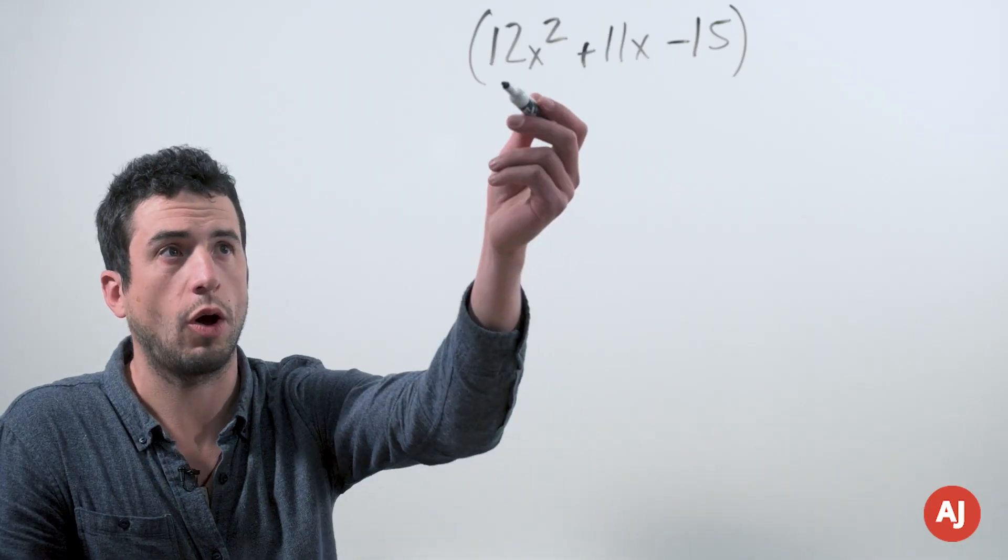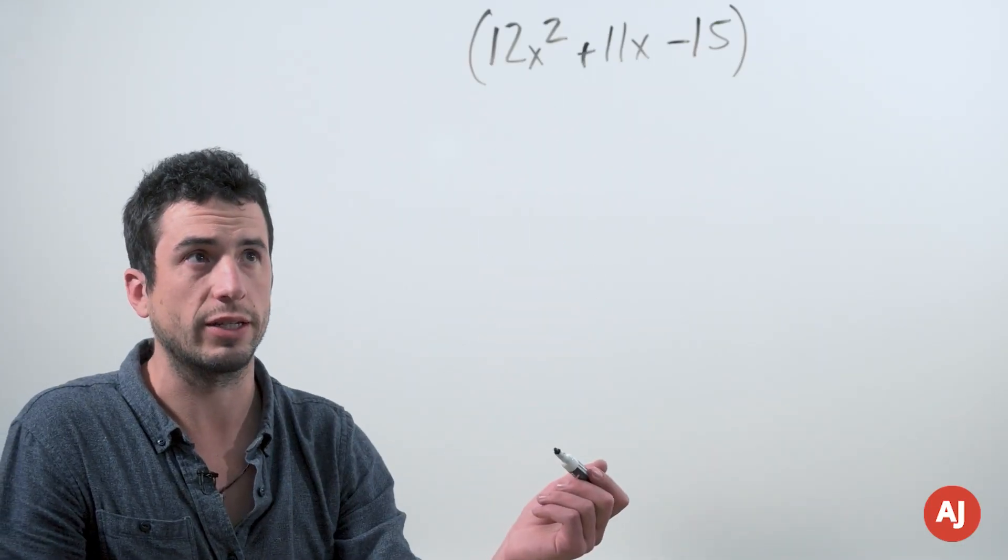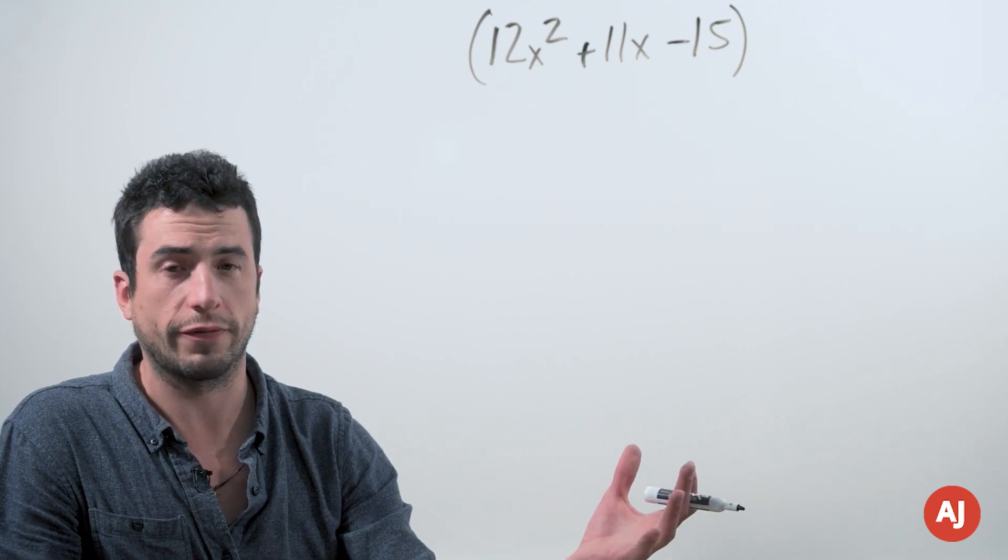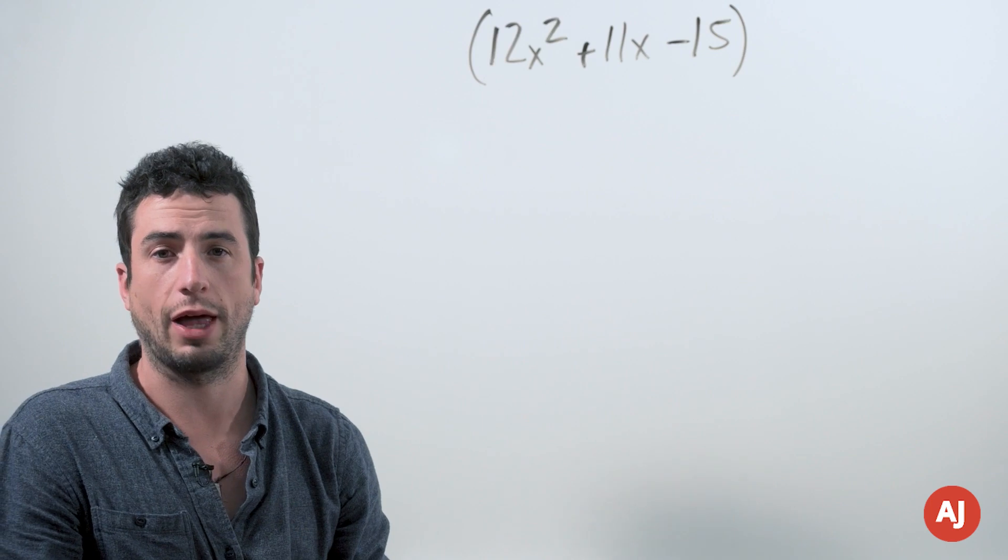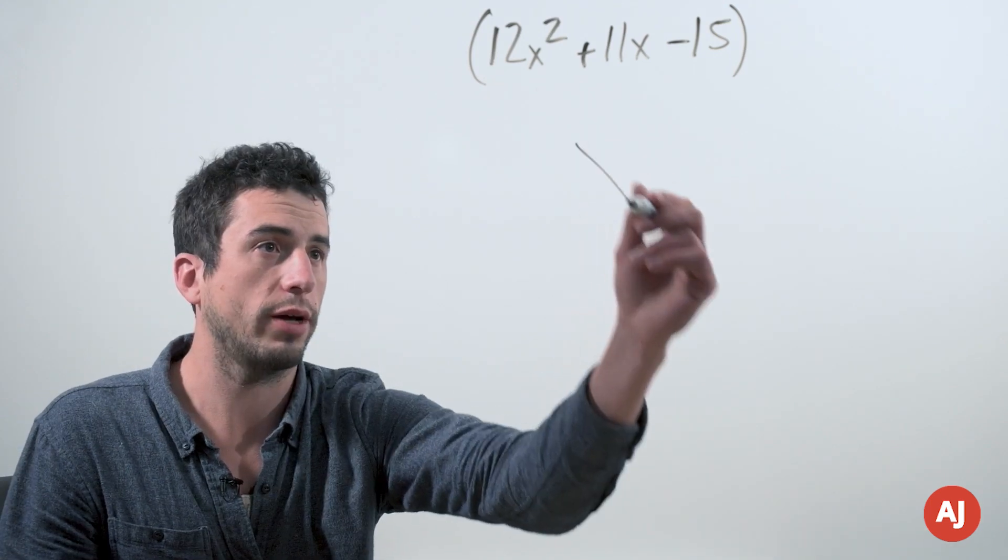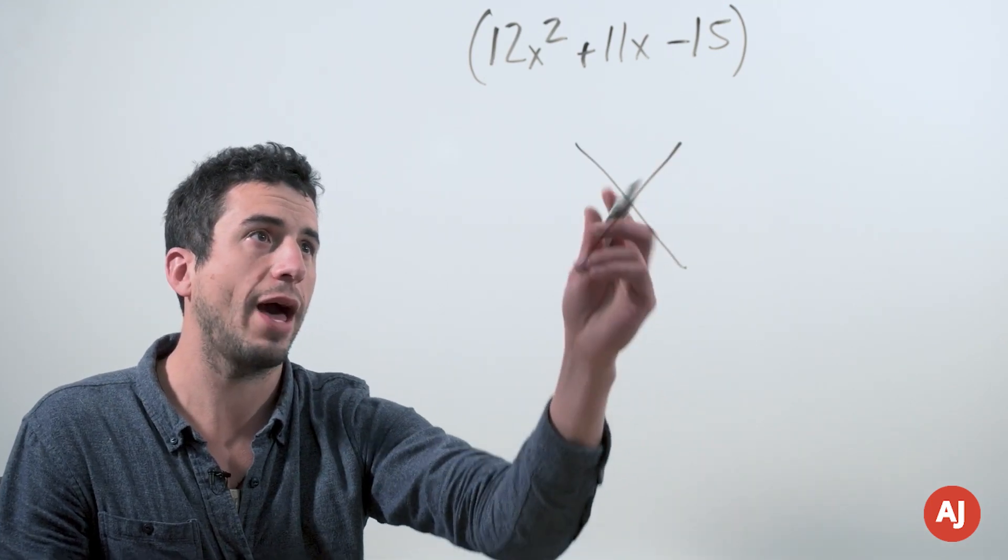So we're going to start here and notice that there's a coefficient of 12 out in front of the leading term. That makes the factoring a little bit more difficult in that we can't simply multiply to negative 15 and add to 11 as we normally would do. However, the process is very similar.